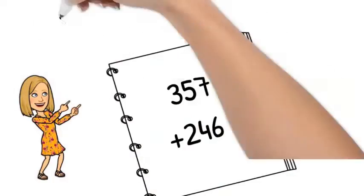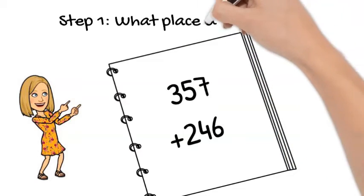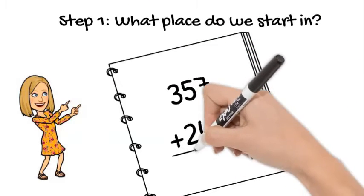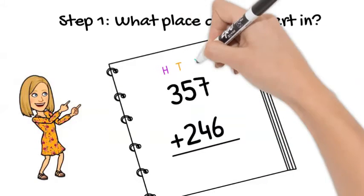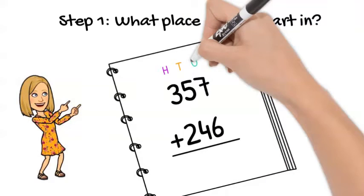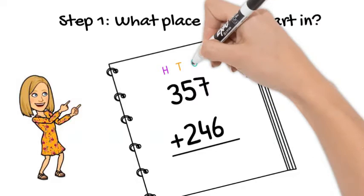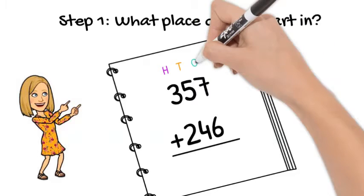So we have to think of what to do first. Step one, what place do we start in? So our problem has the hundreds place, the tens place, and the ones place. Where should we start? You're right, we should start in the ones place. If we start in the hundreds place, it could give us an incorrect answer.